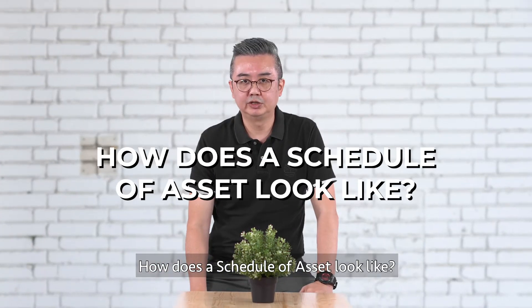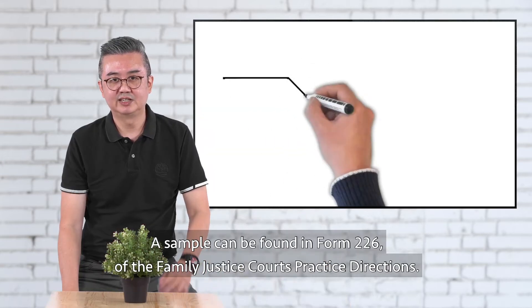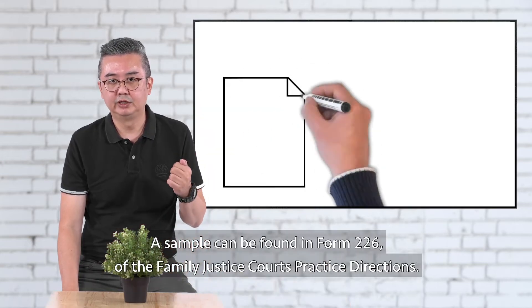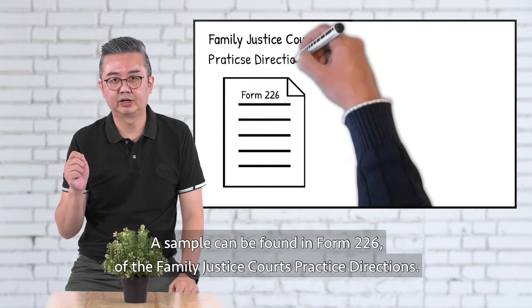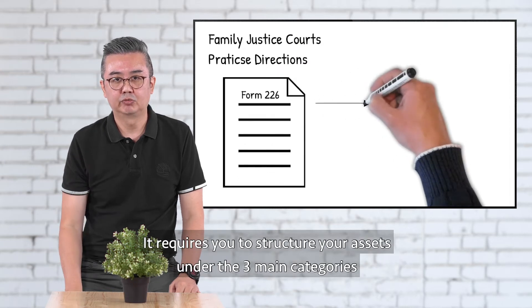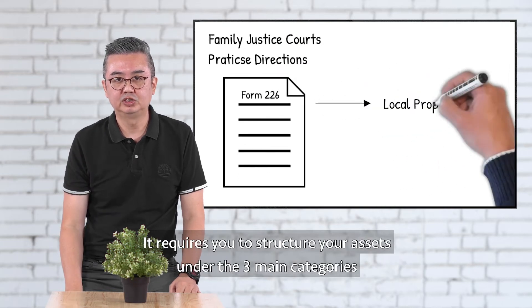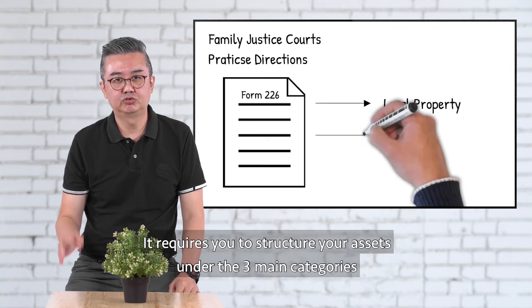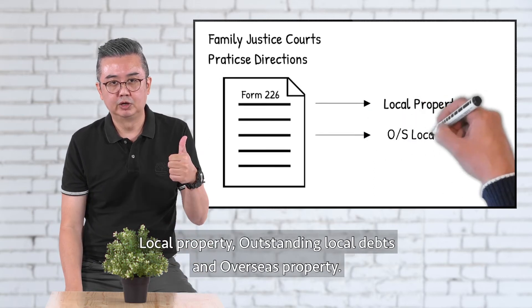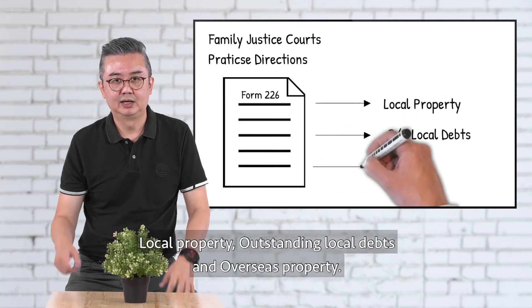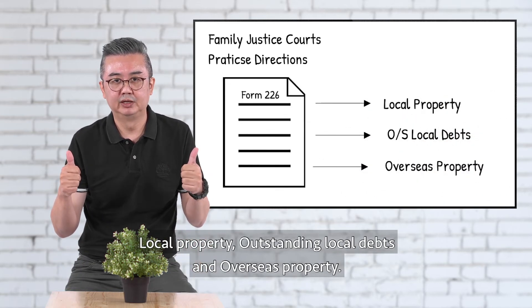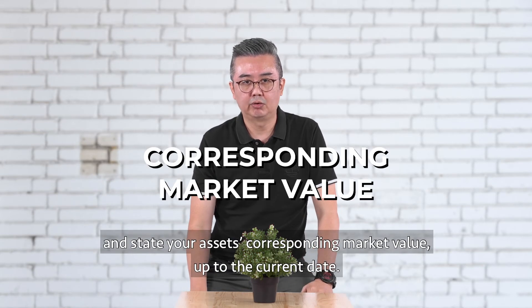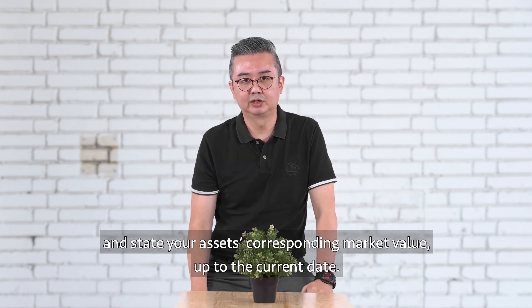So how should your Schedule Asset look? A sample can be found in Form 226 of the Family Justice Court Practice Direction. It requires you to structure your assets under three main categories: local property, outstanding local debts, and overseas property, and state your asset's corresponding market value up to the current date.